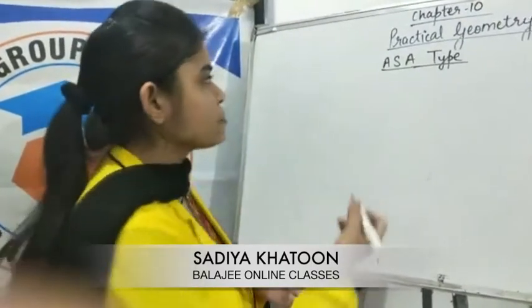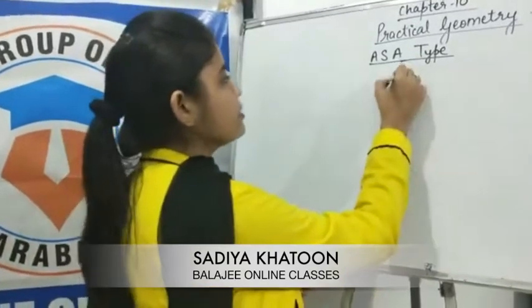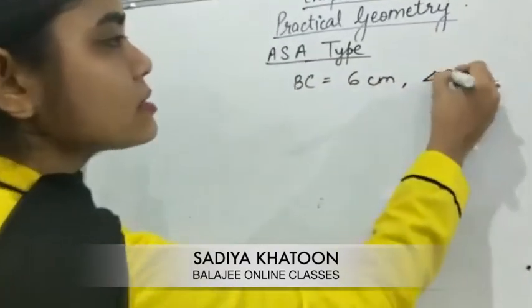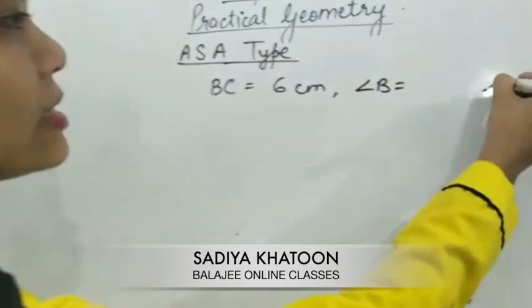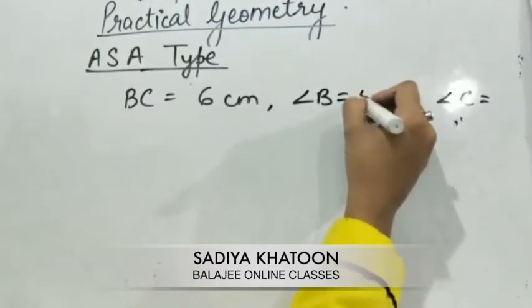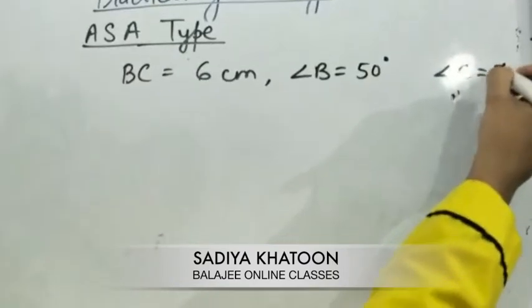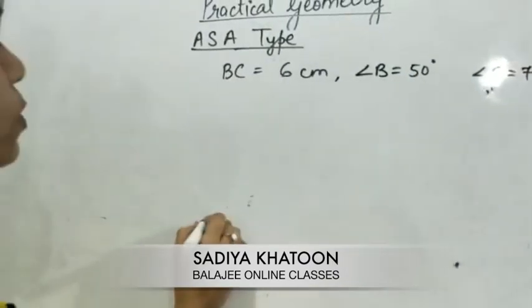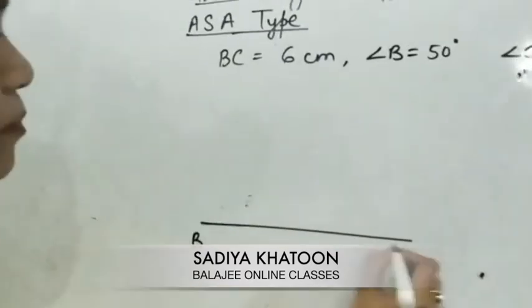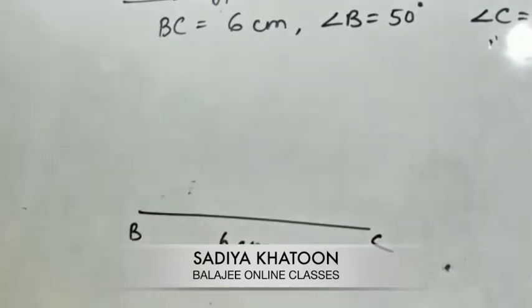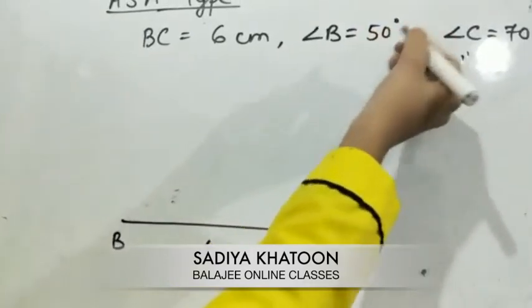Let's take an example. Suppose in triangle ABC, BC = 6 cm, angle B = 50 degrees, and angle C = 70 degrees. You first draw the base BC = 6 cm. Then you draw angle B = 50 degrees using a protractor, since 50 and 70 are not standard compass angles.